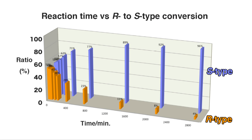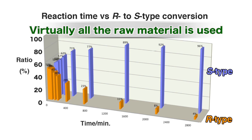In the previous methods, half the R-type remains at the end of the reaction, meaning only half the raw material can be used. With the new method, virtually all the raw material can be used. The key is the selection of catalyst and an anhydride coupling agent.